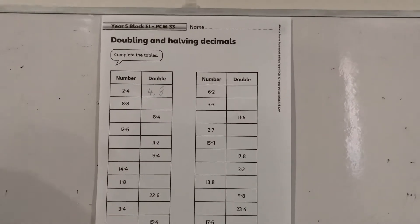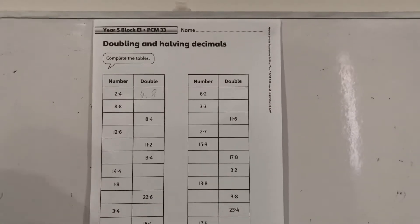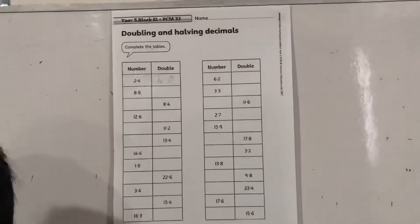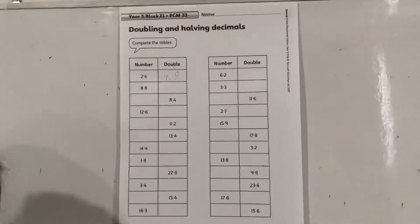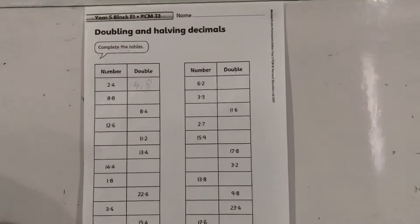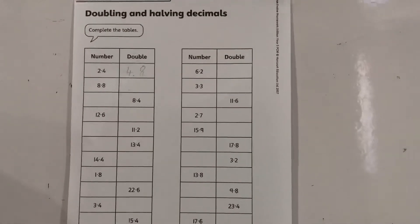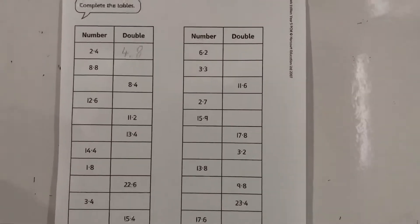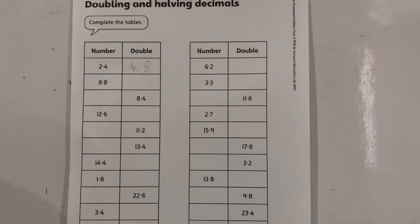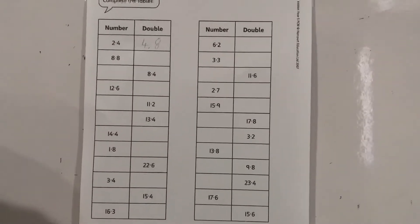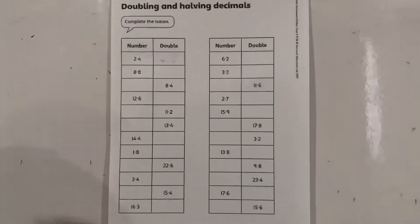Let me double 8.8. 8 plus 8 equals 16, and then 0.8 plus 0.8 equals 1.6, so 16 plus 1.6 equals 17.6.